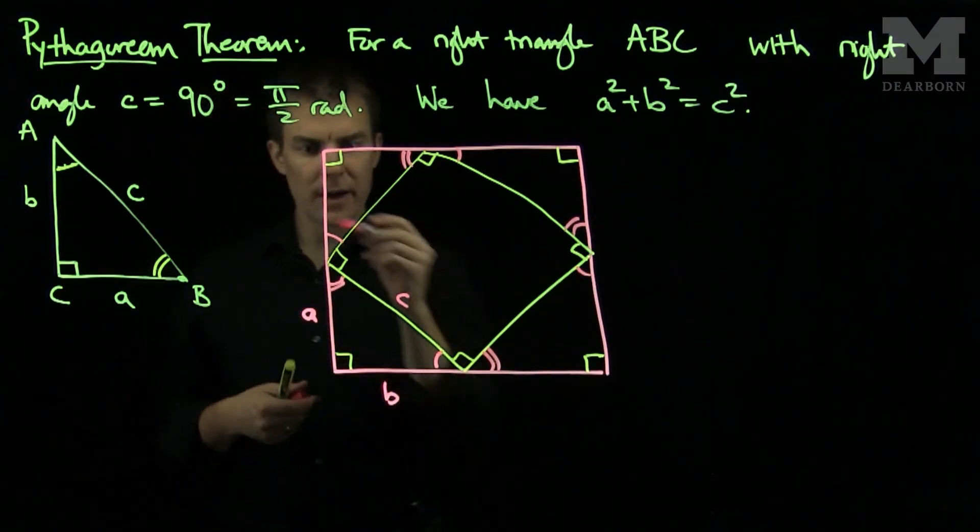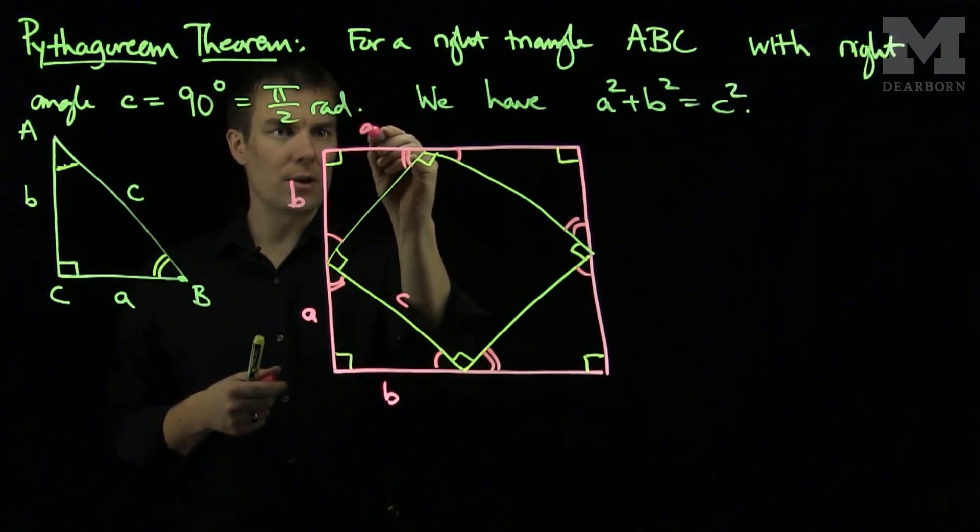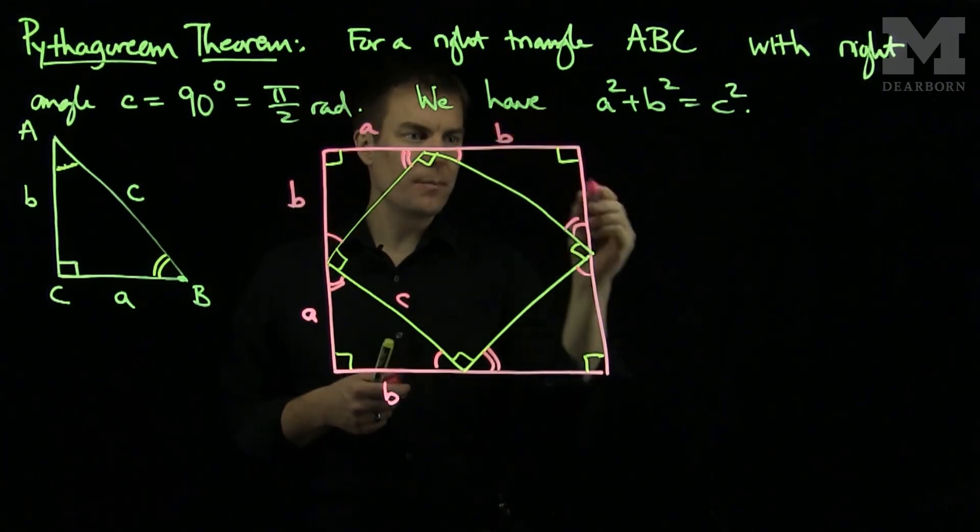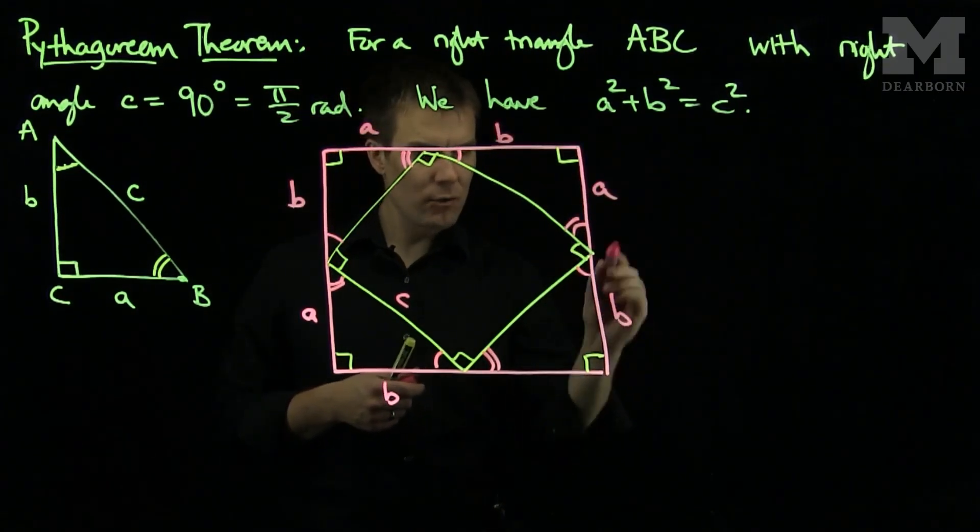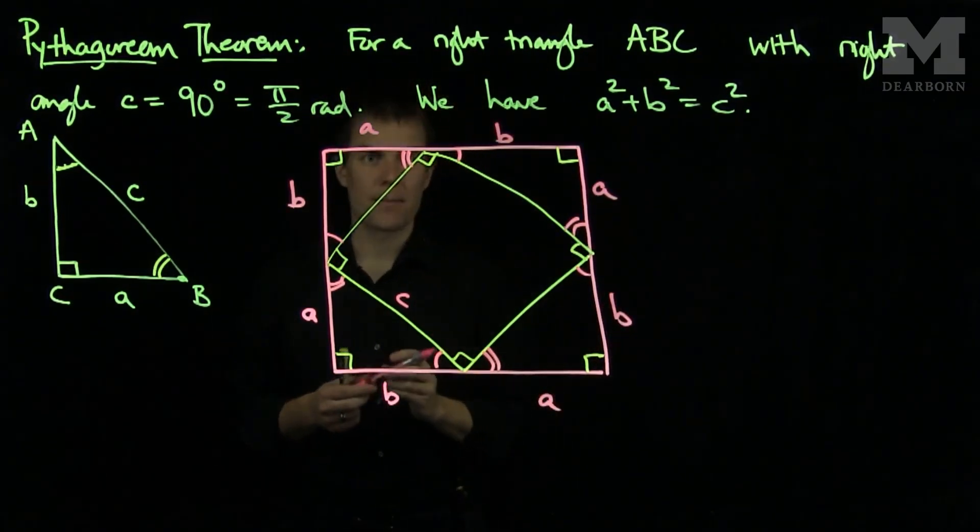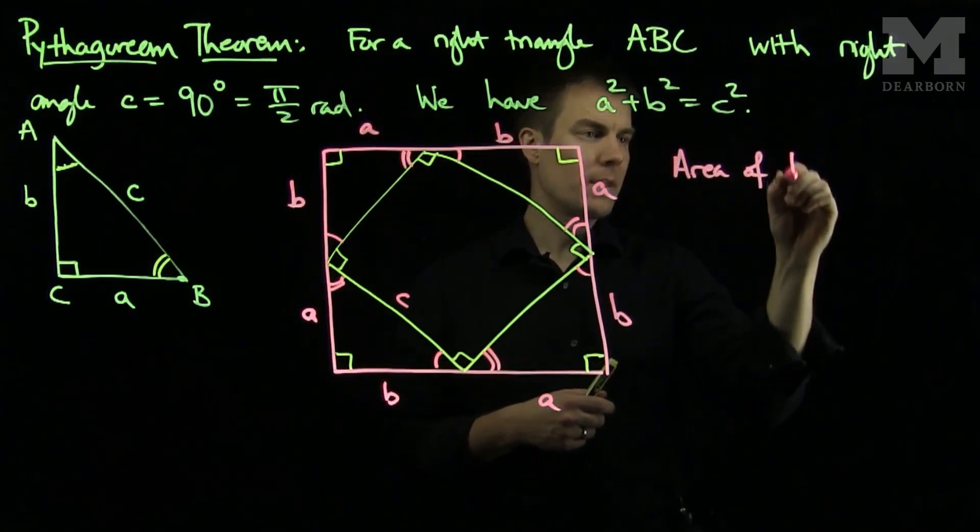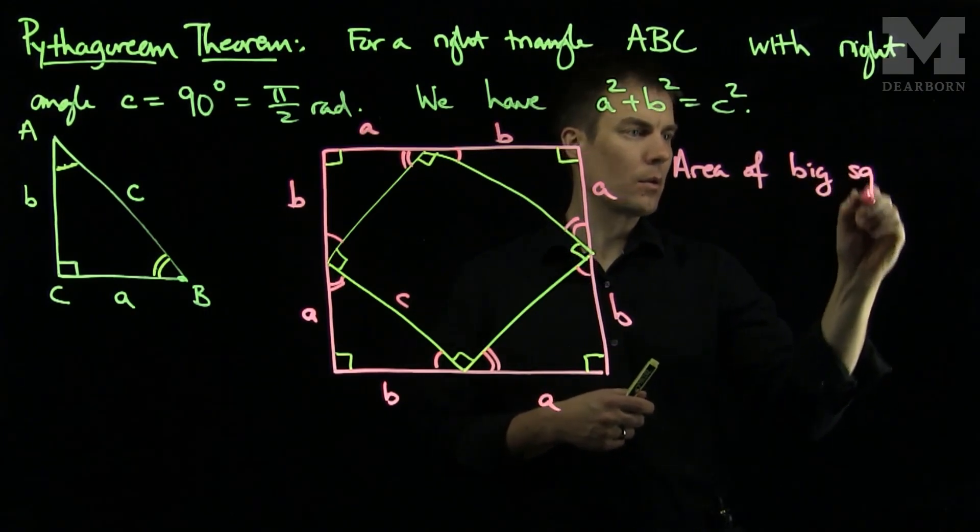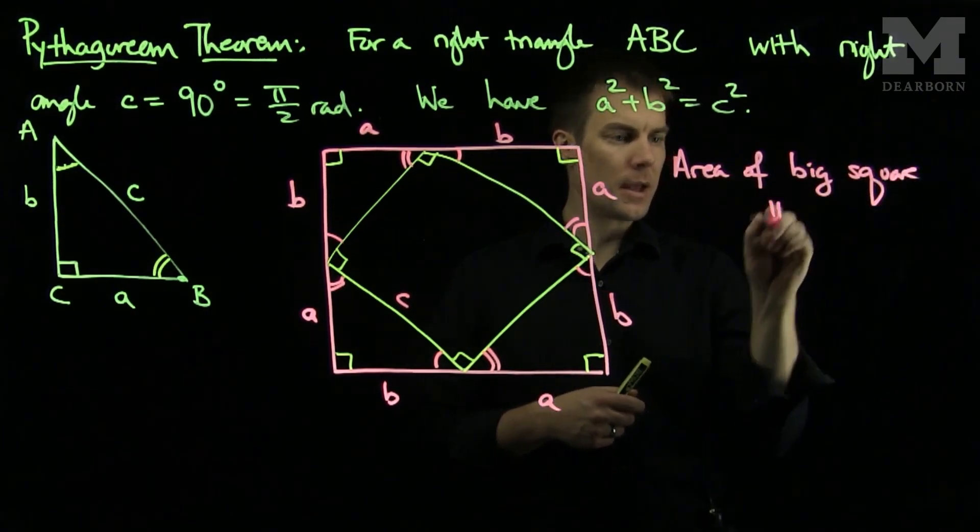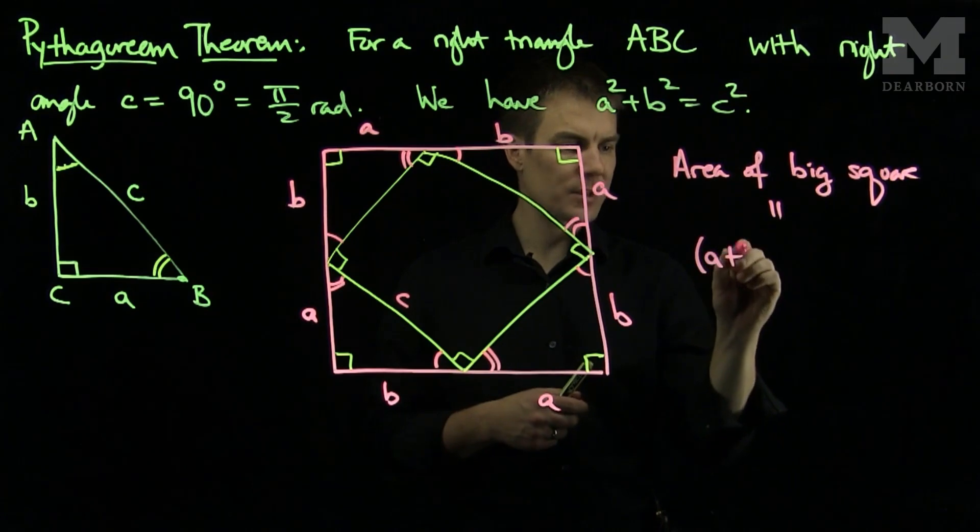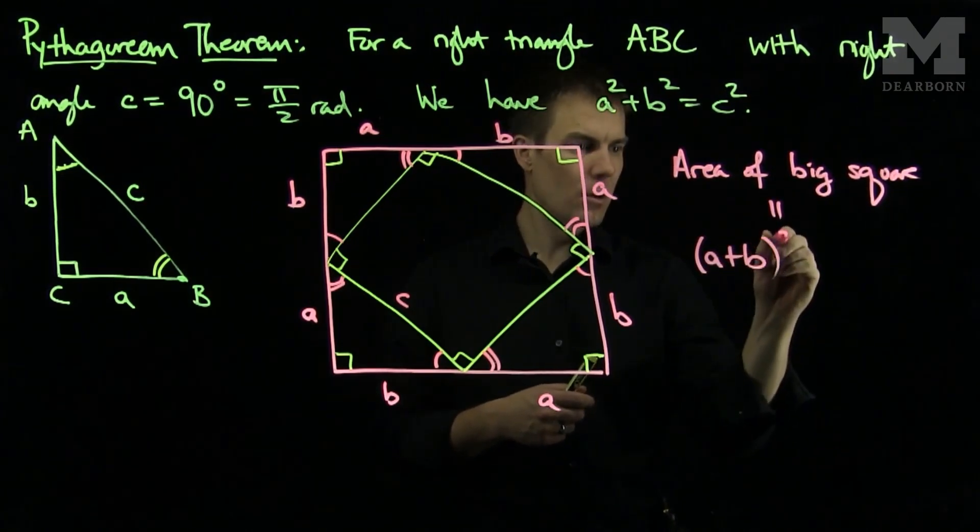So we can fill in these values. This will be my value b, my value a, my value b, my value a, my value b, and my value a. So the area of this square, the big square, is a plus b, which is its side length, quantity squared.